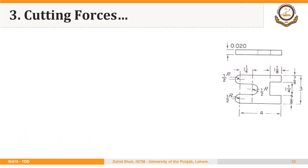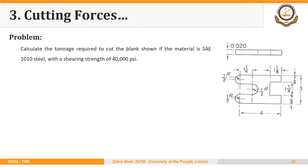Let's find the cutting force required for the blank we have been discussing — the same blank used for strip layout and for determining punch and die size. We have to calculate the tonnage required to cut the blank if the material is SAE 1010 mild steel with a shearing strength of 40,000 psi. We know thickness and shear strength, so we only need to calculate L, the perimeter of the blank.